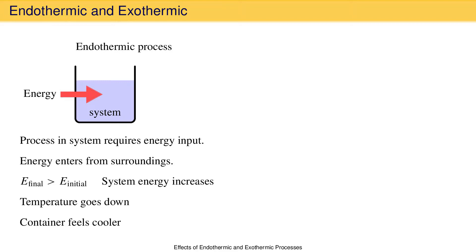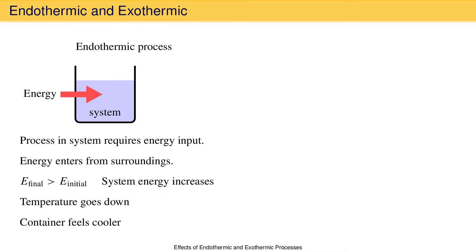These statements and observations are all true, but sometimes you might be inclined to say: hang on, these things don't make sense. How can it be true, for instance, that the energy of the system increases but the temperature goes down? Those things seem contradictory. At the same time, it makes sense that you would perceive the temperature of the beaker to go down because energy leaves the beaker and your hand, which are part of the surroundings, to enter the system as the endothermic process takes place. It turns out there really isn't a contradiction, just an appearance of one.